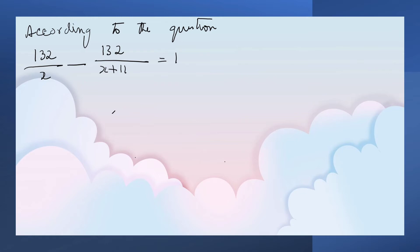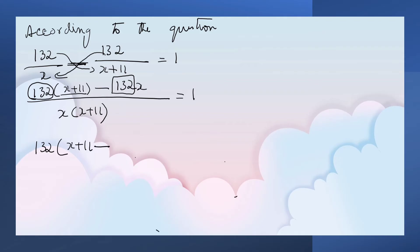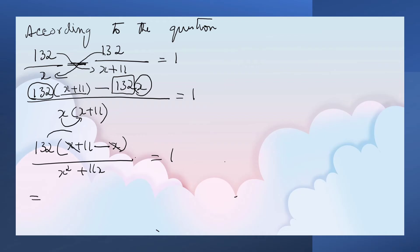The LCM is x into (x plus 11). In the numerator: 132 into (x plus 11) minus 132 into x, divided by x squared plus 11x, is equal to 1. Observe that 132 is common — take it outside. So 132 into (x plus 11 minus x), divided by x squared plus 11x, equals 1. The x terms cancel, giving 132 into 11, which is 1452, equal to x squared plus 11x.